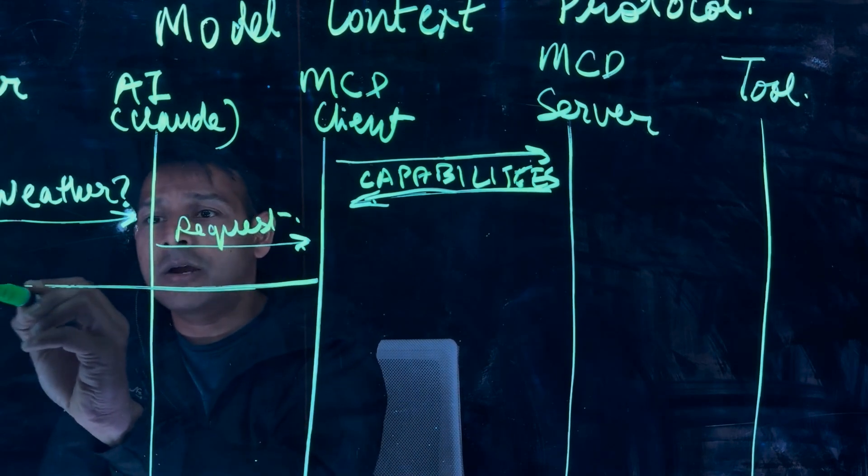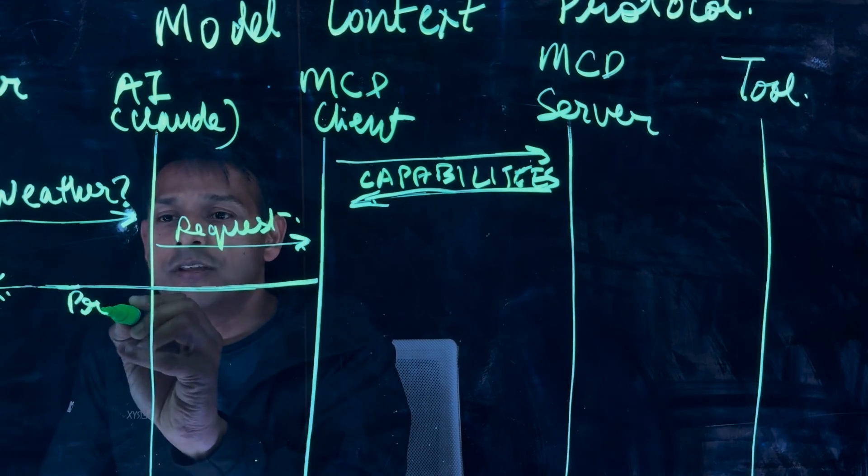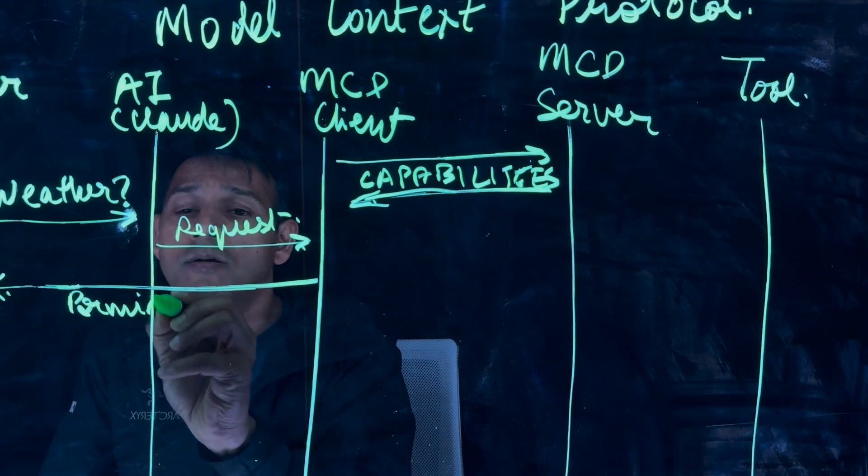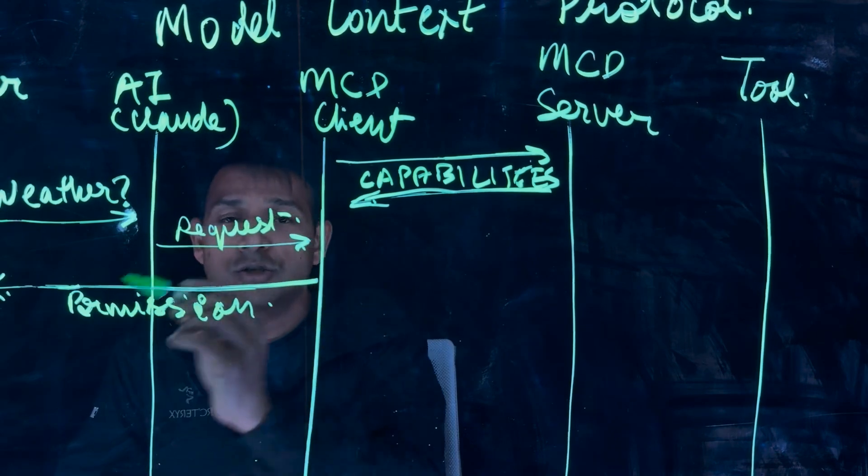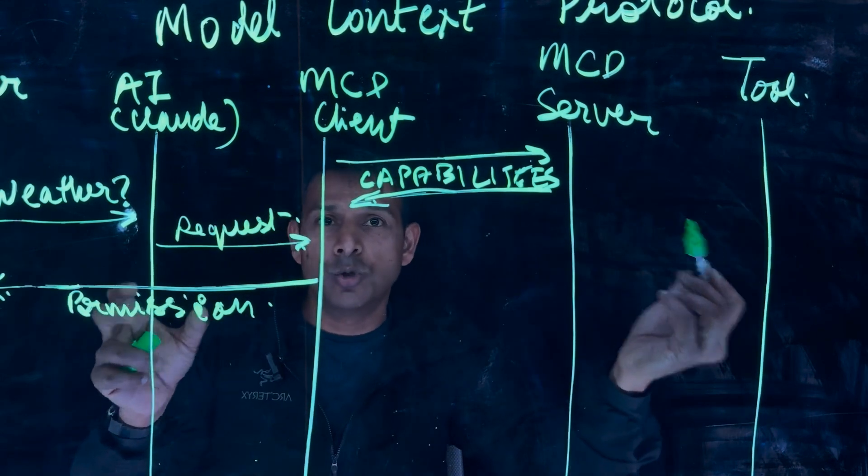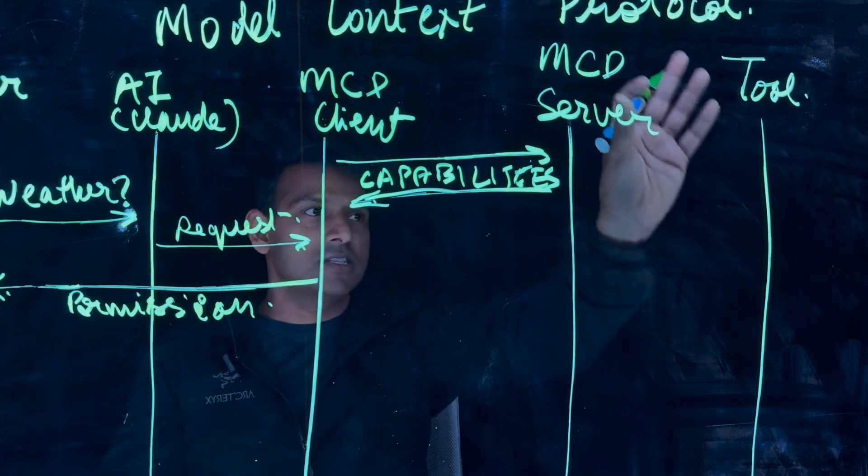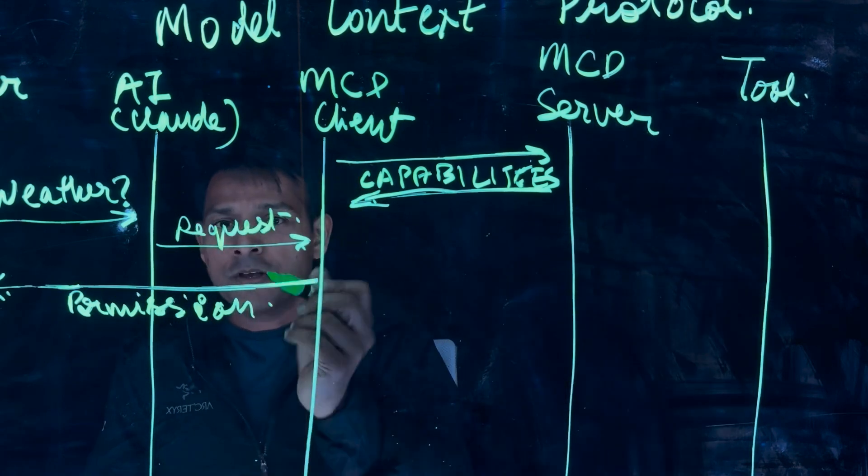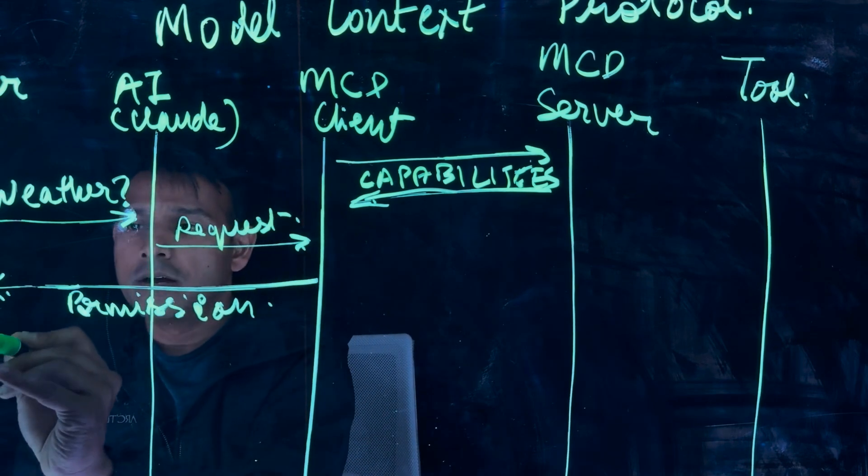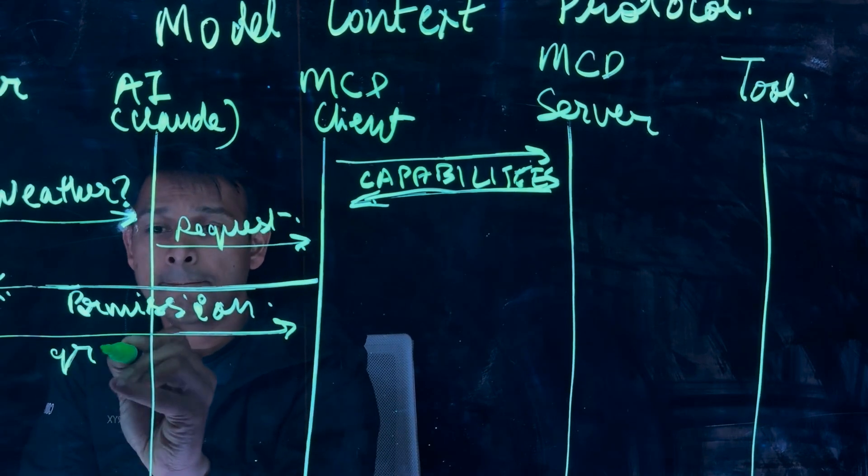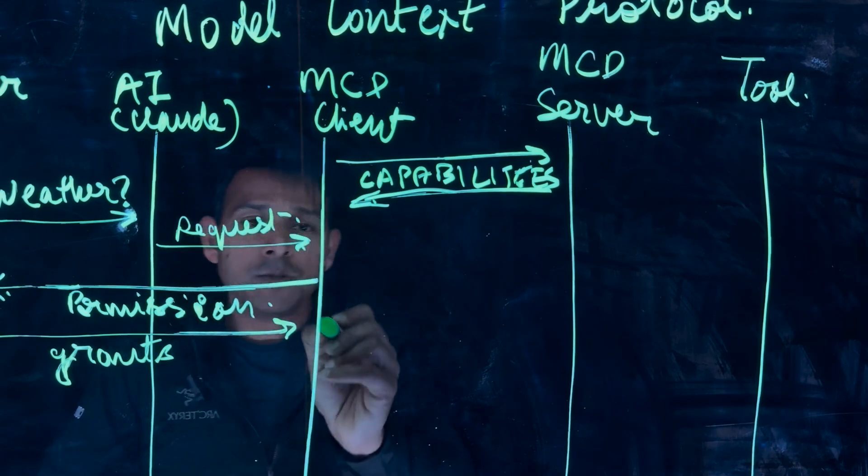MCP client will return the capabilities available and might even request permission needed. At this point of time, if there is an external tool that is used and needs access, the user needs to allow permission to that external tool because this capability that is needed might require certain authorization, certain authentication from that tool. So that permission is sent to the end user. The end user grants the permission.